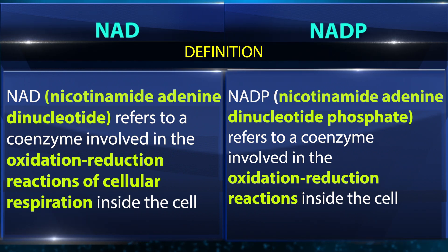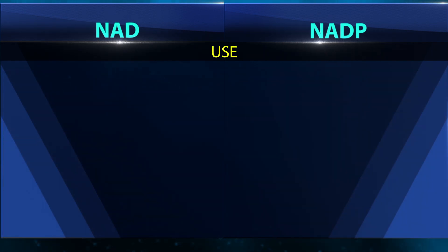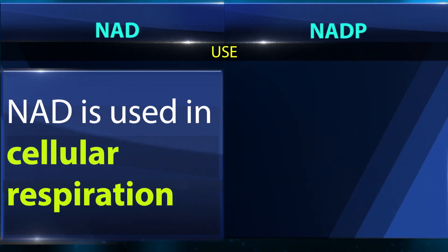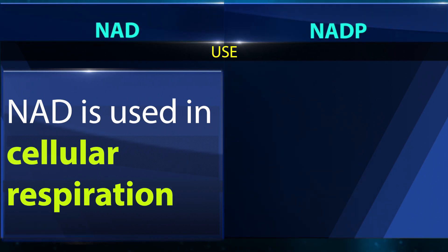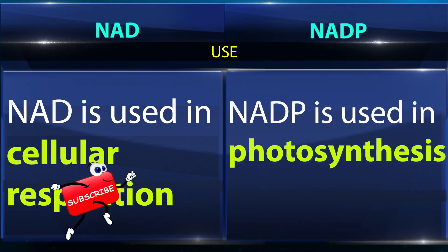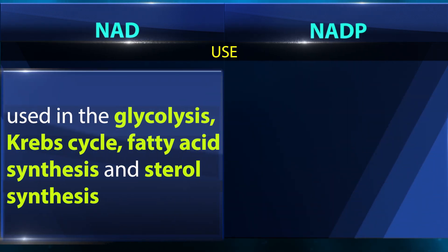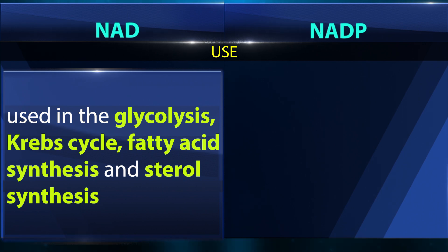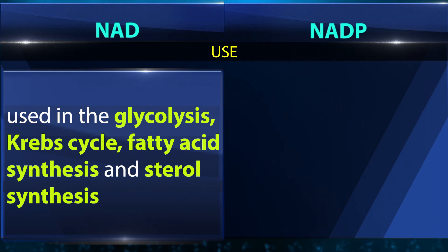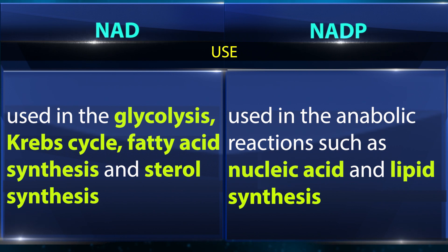NAD is used in cellular respiration, while NADP is used in photosynthesis. NAD is used in glycolysis, the Krebs cycle, fatty acid synthesis, and sterol synthesis. NADP is used in anabolic reactions such as nucleic acid and lipid synthesis.